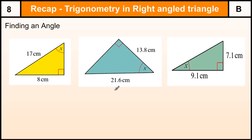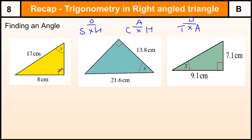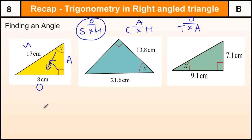Now trying to find the angle. The formulas SOH, CAH, and TOA allow us to work out missing angles and missing sides in right angle triangles. In this first example, the longest side opposite the right angle is the hypotenuse. The opposite side to the angle is 8 and the adjacent side is not involved. We are using the angle, the opposite, and the hypotenuse, so the formula to use is the sine formula: sin(x) = opposite/hypotenuse = 8/17.